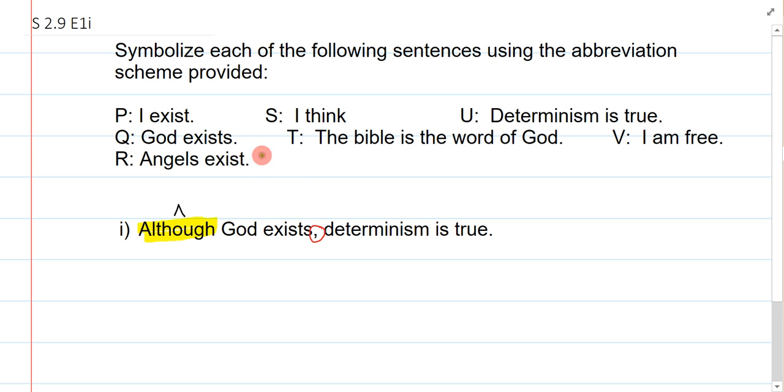And then, now God exists. I look at my abbreviation scheme and I realize that's Q. And determinism is true. That's U. Now, I'm ready to symbolize. All I have to do is realize that the although is paired with the main break, the connective here.